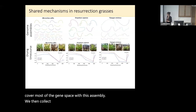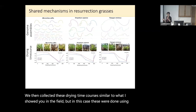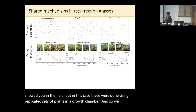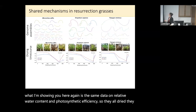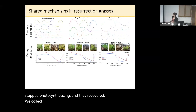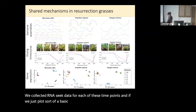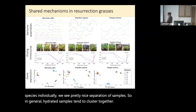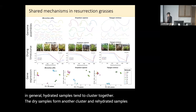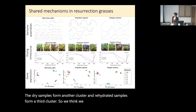We then collected drying time courses, done using replicated sets of plants in a growth chamber, drying them down over the course of two weeks and then rehydrating. Again, the data shows relative water content and photosynthetic efficiency — they all dried, stopped photosynthesizing, and recovered. We collected RNA-seq data for each of these time points. If we plot a basic PCA of gene expression for each species individually, we see a pretty nice separation of samples: hydrated samples cluster together, dry samples form another cluster, and rehydrated samples form a third cluster. We think we had pretty good quality datasets.